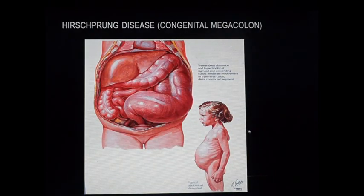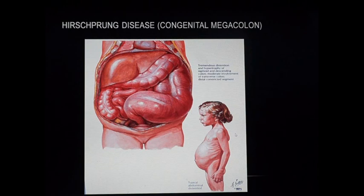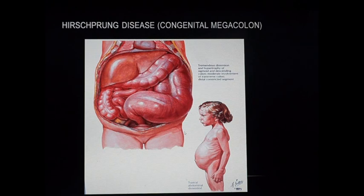Hirschsprung's disease is a congenital malformation involving the absence of the submucosal plexus — the Meissner's plexus and the myenteric plexus — which are present within the muscular wall of the GIT. In the lower part of the GIT, due to failure of migration of neural crest cells to this area, the submucosal plexus fails to appear. Because of the absence of these plexuses, peristaltic movements lose their reflex, causing a megacolon. It occurs in one in five thousand births.